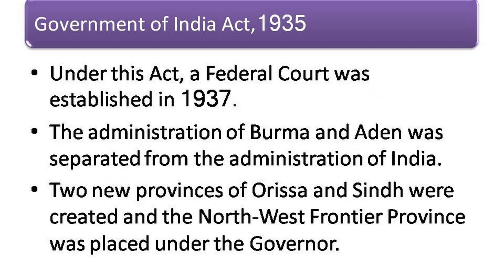Under this act, a federal court was established in 1937. The administration of Burma and Aden was separated from the administration of India. Two new provinces of Orissa and Sindh were created, and the Northwest Frontier Province was placed under the governor.